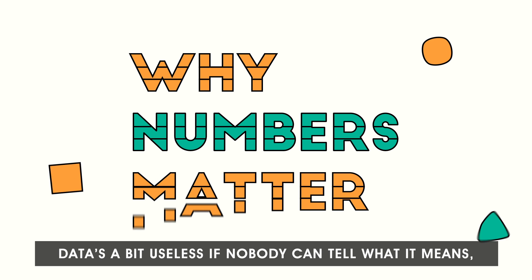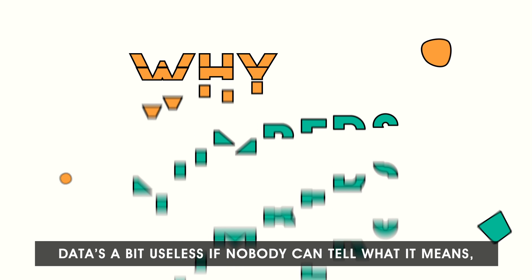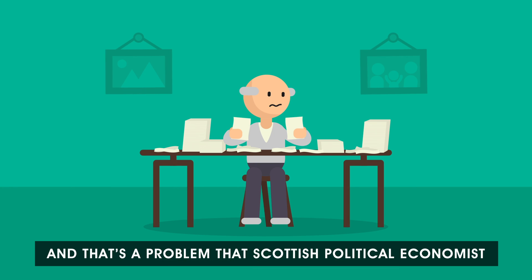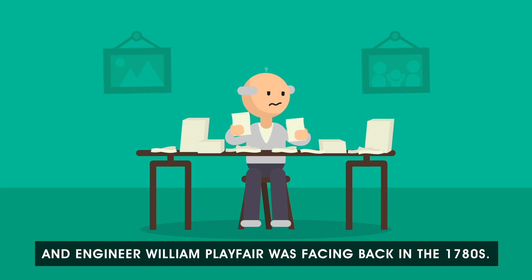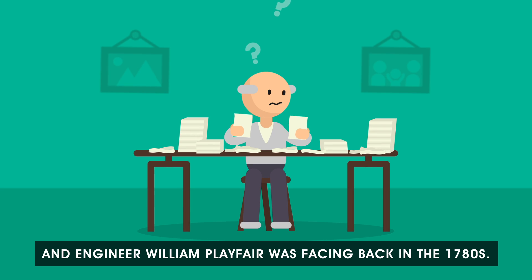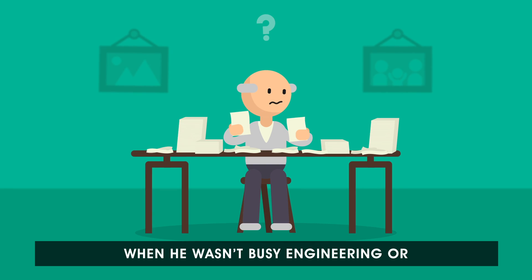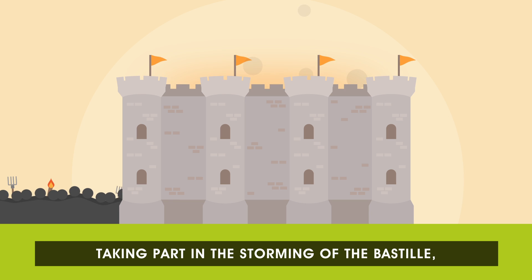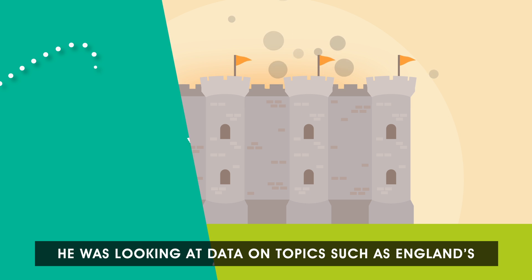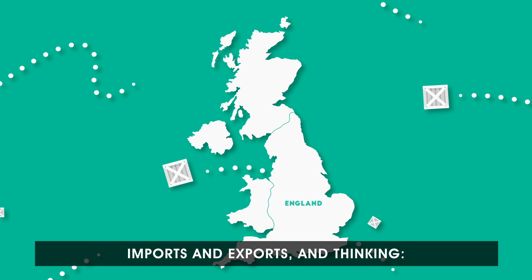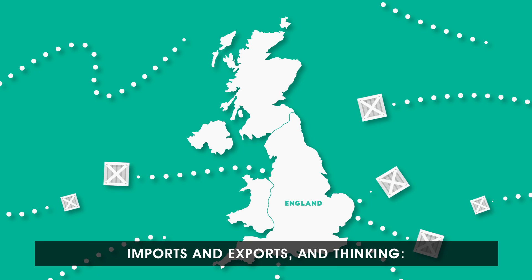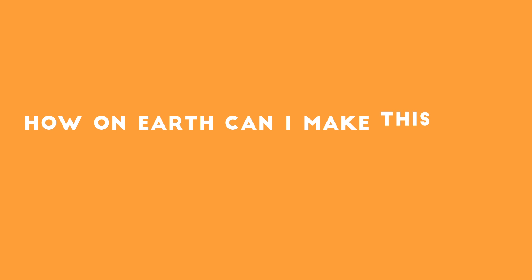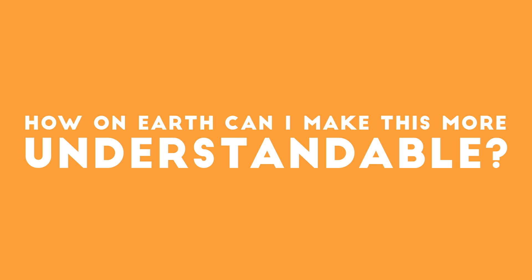Data is a bit useless if nobody can tell what it means, and that's a problem that Scottish political economist and engineer William Playfair was facing back in the 1780s. When he wasn't busy engineering or taking part in the storming of the Bastille, he was looking at data on topics such as England's imports and exports, and thinking, how on earth can I make this more understandable?